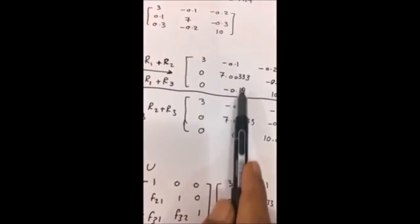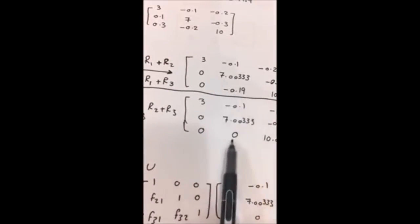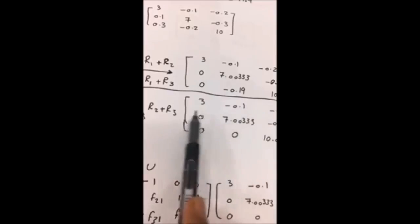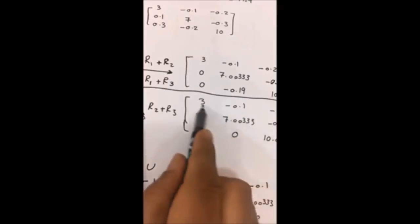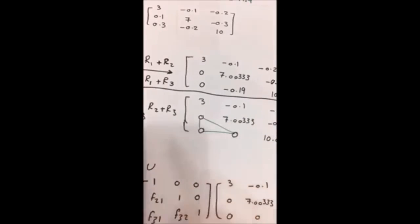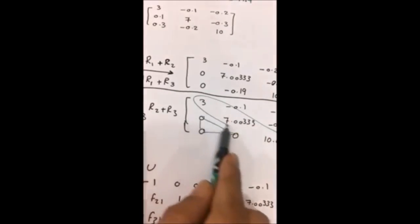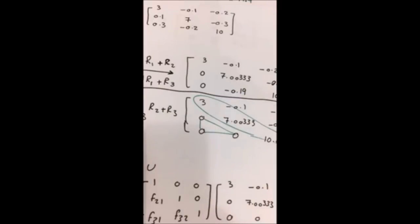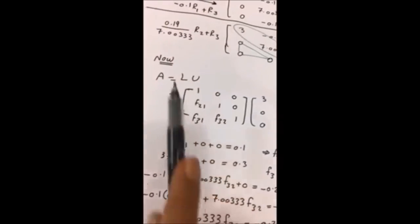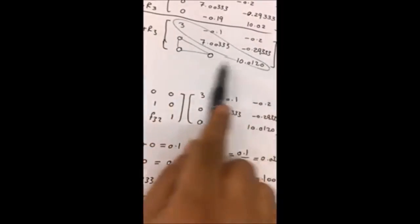باقي الخطوة الأخيرة أن نخلي العنصر في الصف الثالث أسفل العمود الثاني صفراً عشان نكمّل الـ Upper Triangular Matrix. يعني نخلي ما تحت القطر الرئيسي كله أصفار، والباقي يعتبر عناصر الـ main diagonal وما فوقها. وبهذا نكون حسبنا الـ U.